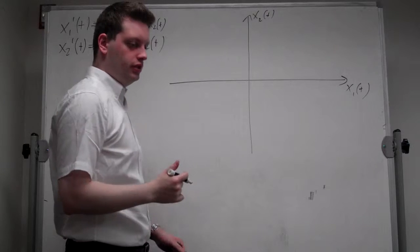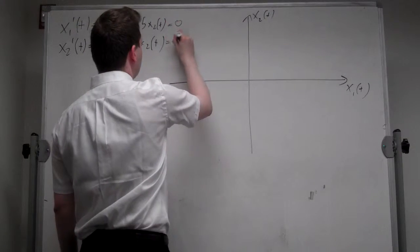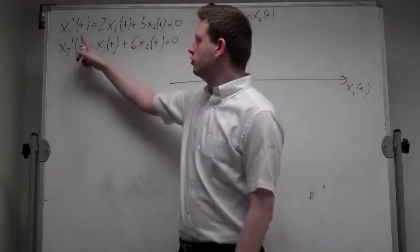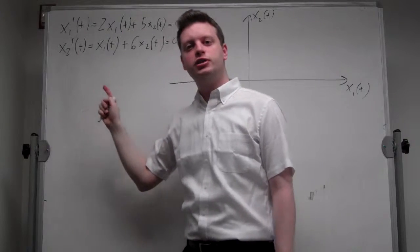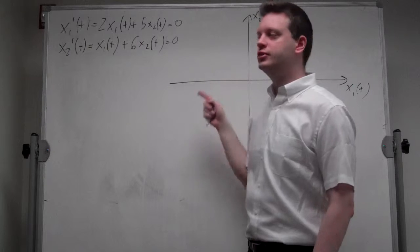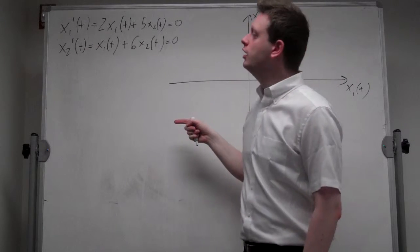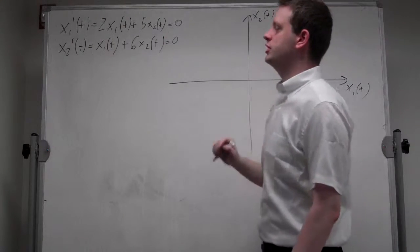Now, in this diagram, to draw neatly, we set x1 prime t and x2 prime t equal to 0, so where there's no movement in the horizontal direction and where there's no movement in the vertical direction. And we solve, since x2 t is on the vertical axis, for x2 t.